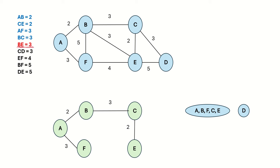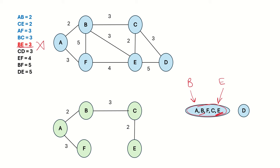Next we check edge BE, which has vertices B and E. The representative set of B and the representative set of E are actually the same set — they are not different. So we cannot add this edge to the MST. You can also see that adding this edge would form a cycle. This is exactly the condition we check to ensure there are no cycles. Since B and E already belong to the same set, edge BE is not added.